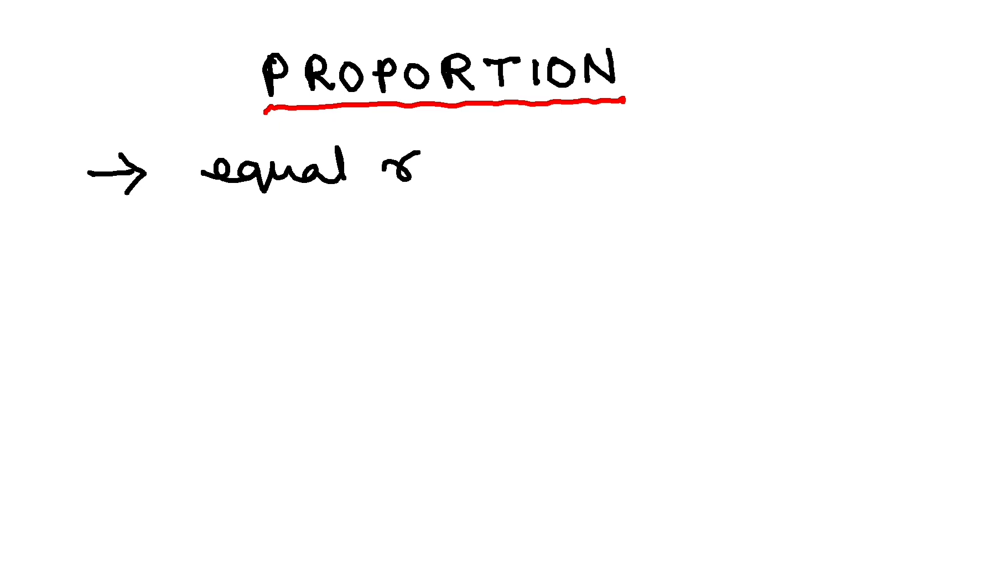So proportion means equal ratios. If we take two equal ratios, suppose A by B is one ratio and C by D is another ratio and they are equal.